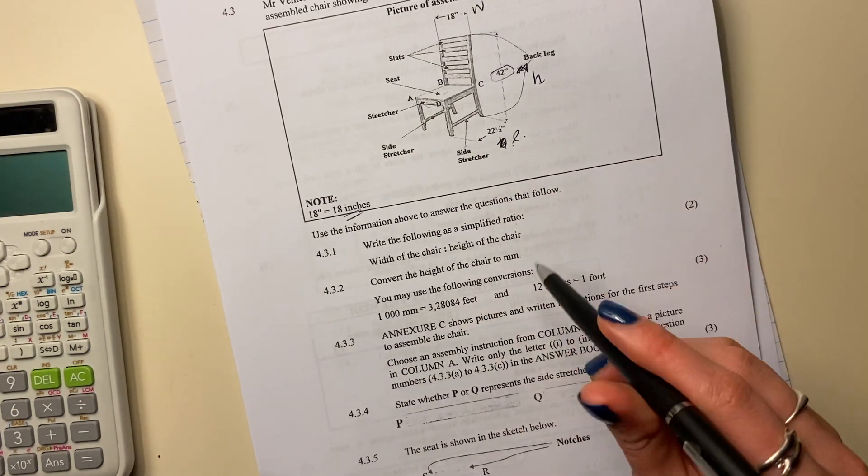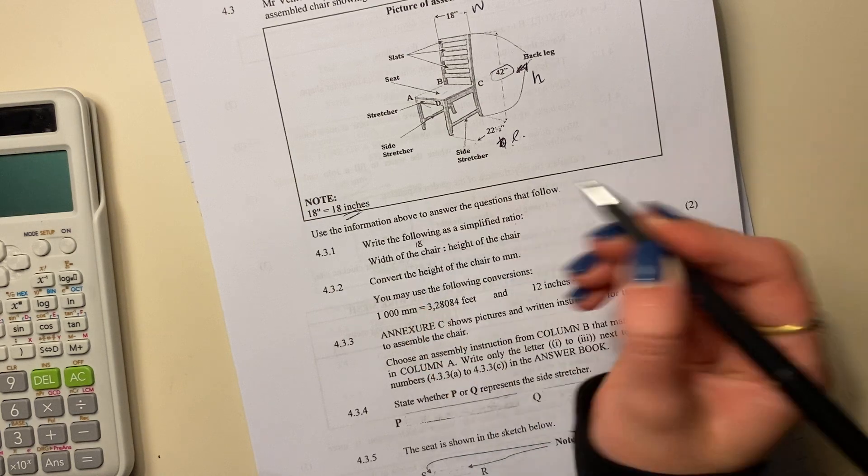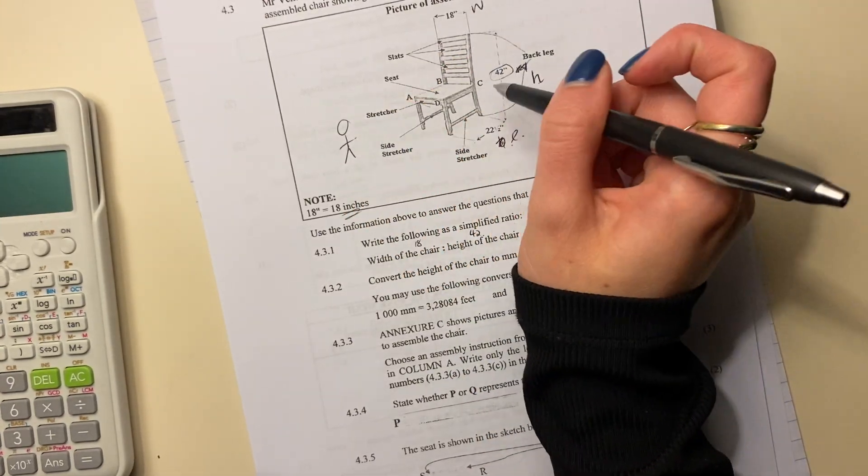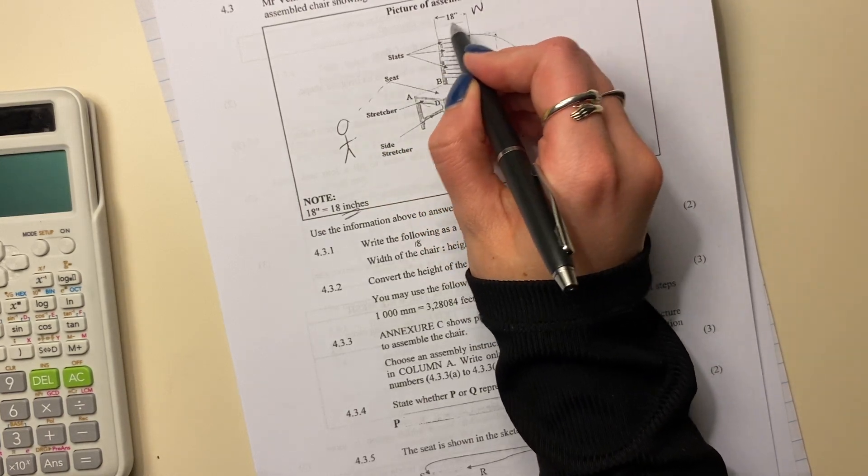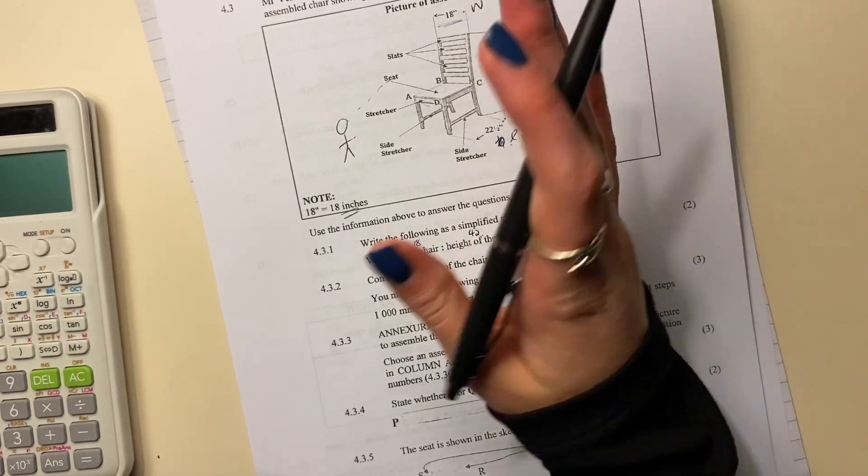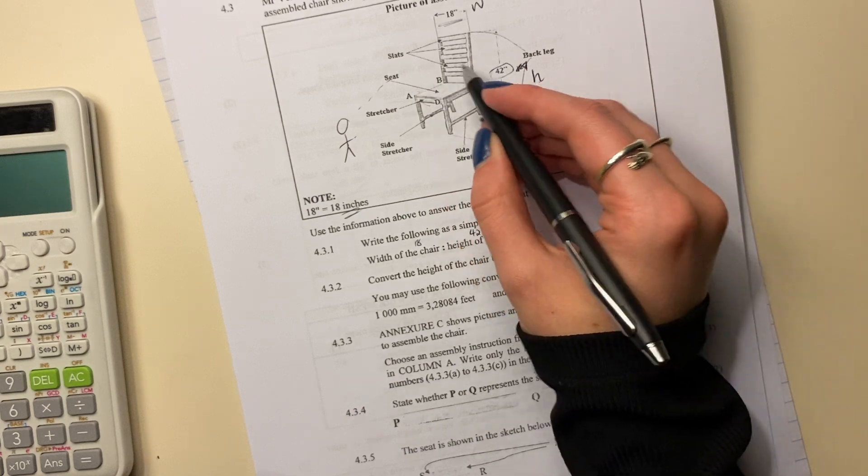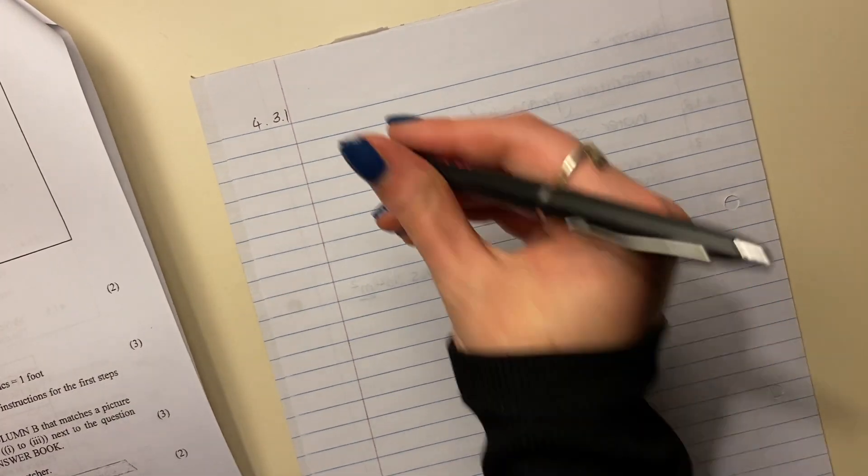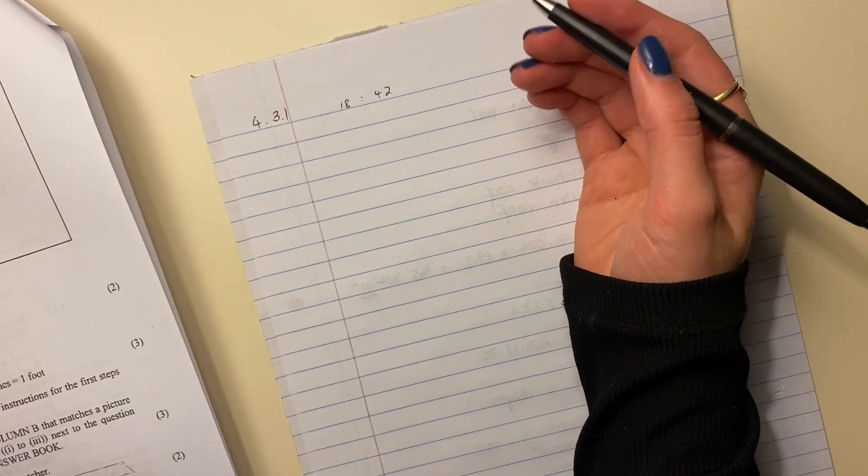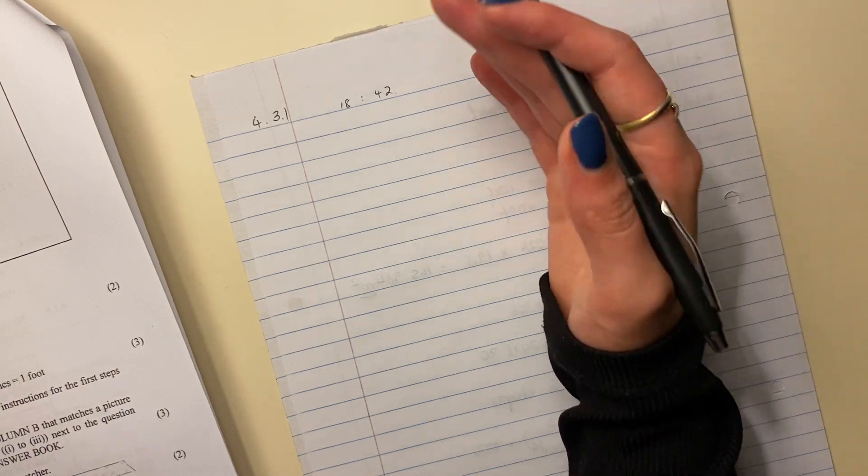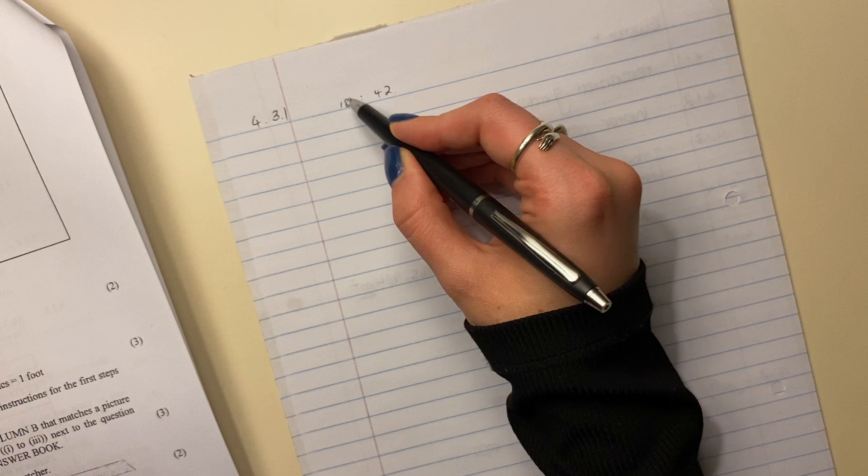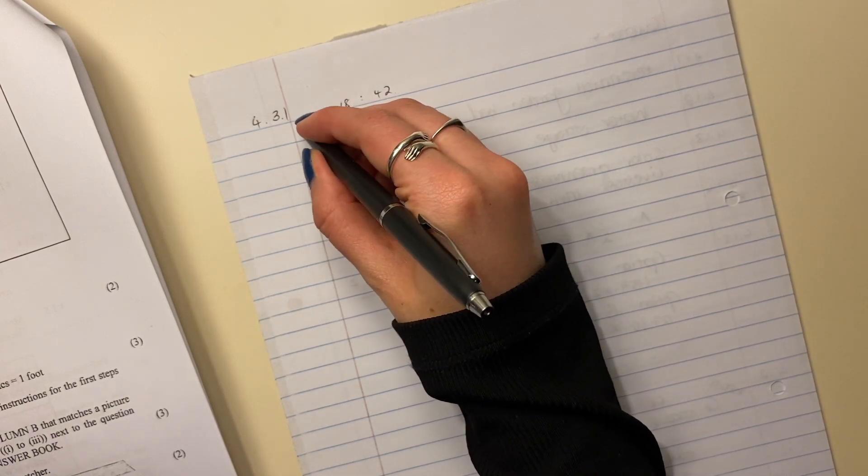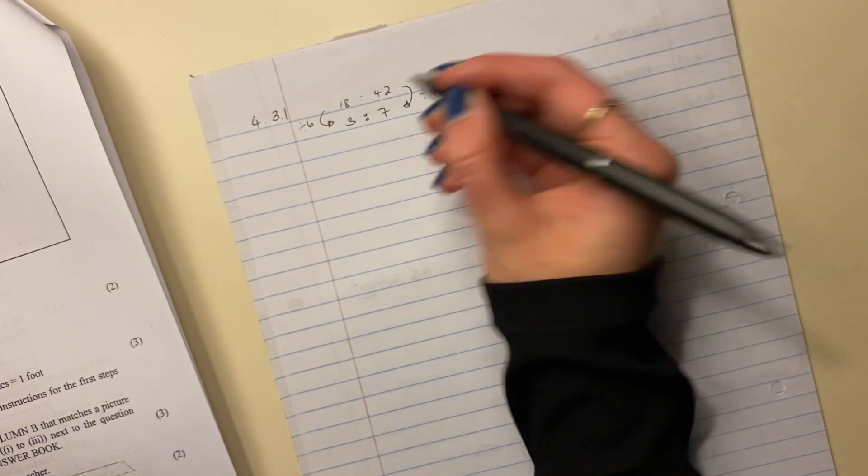So 4.3.1, write the following as a simplified ratio: the width of the chair, which we said is 18, to the height of the chair, which is 42. Width is basically when you look at a shape, if you were standing over here and looked at this chair, that would be the width. It's the one that's kind of on top if you were just looking at it from the front. So let's go and simplify it. It would be 18 to 42. What they mean by simplified is basically there's no number that can go into each of them that will make them smaller without making them fractions. What's the number that can go into both of them? You should be able to think of 6.